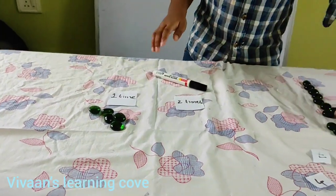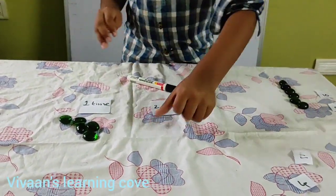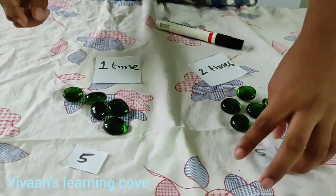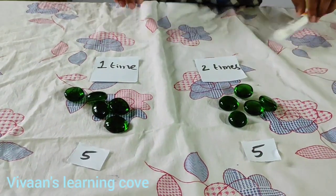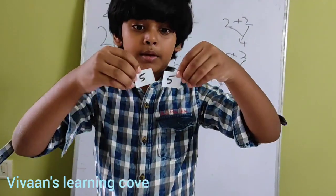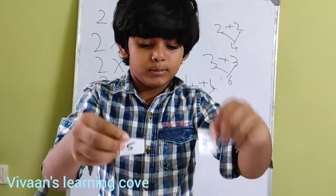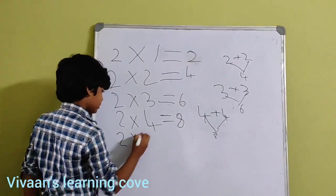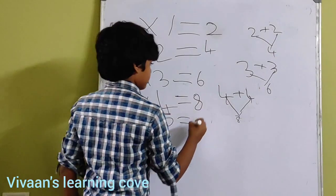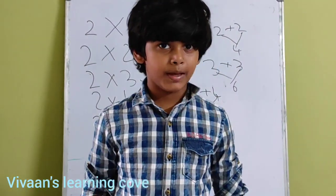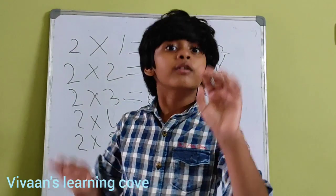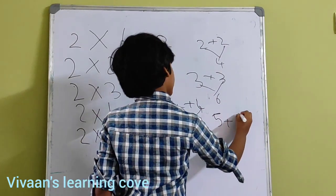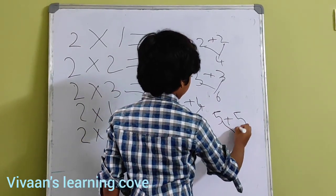I am going to take 5 pebbles 1 time and 5 pebbles 2 times. I take these cards and represent them under 1 time and 2 times. These cards mean there are 2 fives, so 2 times 5. We write this as: 2 times 5 equal to 10. We already know there are 10 pebbles — we write it as 5 plus 5 equal to 10.